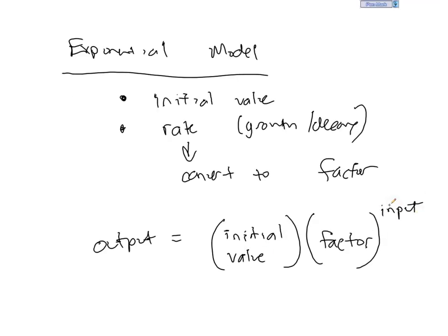So for us to know the number of cars in the parking lot, we took the initial value, which was 300 cars, we multiplied it by the decay factor of 0.95, and we multiplied it by that factor depending on how many minutes had passed.